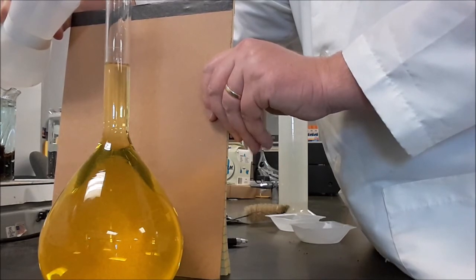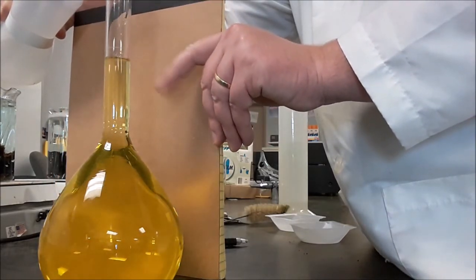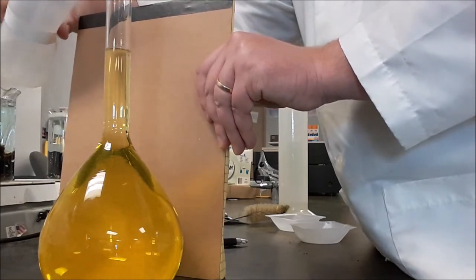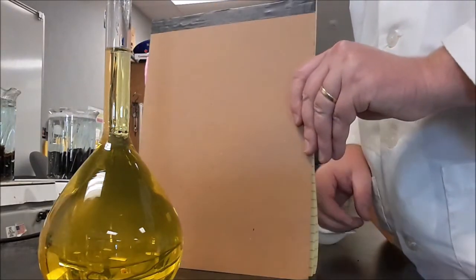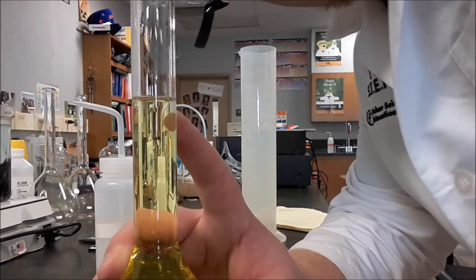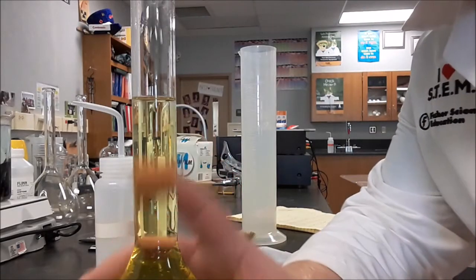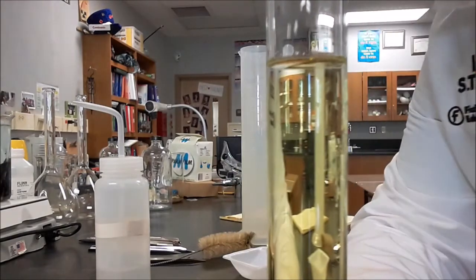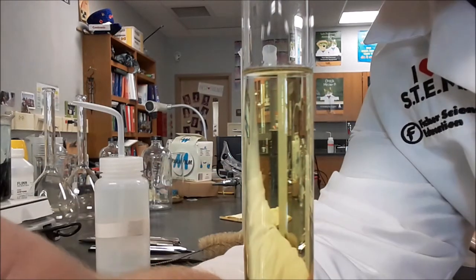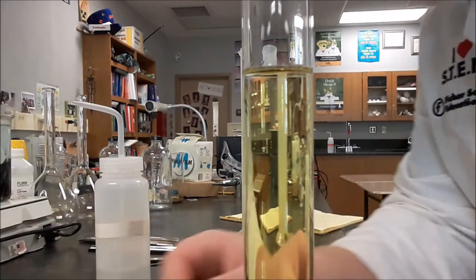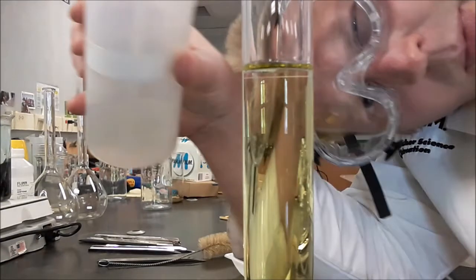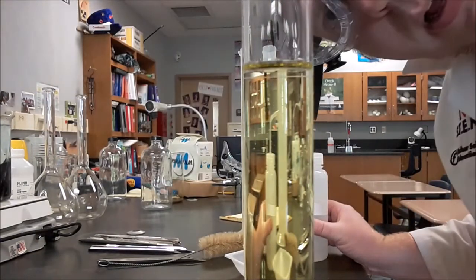So as I start to get close to the line, here's the line right here, as I start to get close to it, I want to read the line from the bottom of the meniscus. OK. So getting the camera down right on eye level, getting my eye right on eye level to look at the bottom of the meniscus right there, I want to continue to fill this up until the bottom of the meniscus is right on that line.